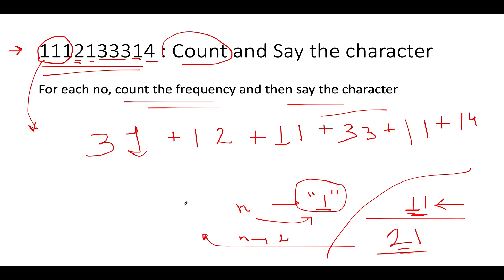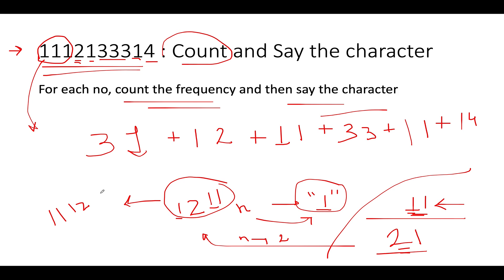For n=4, we apply count and say to '2 1': two occurs once giving 'one two', and one occurs once giving 'one one', so the sequence is '1 2 1 1'. For n=5, one occurs once: 'one one'; two occurs once: 'one two'; then two ones occur: 'two one'. The result is '1 1 1 2 2 1'. You can generate future sequences yourself — just identify each character's frequency and write frequency followed by character.